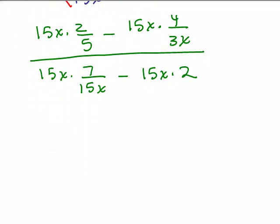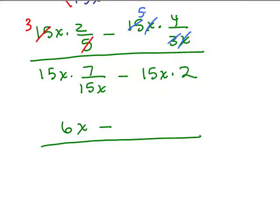Now we get to do the fun canceling. Let's see, 5 goes into 15 three times. So what I really have is 3 times x times 2, which is 6x. And I have minus, let's see what happens here. The x's both cancel, and the 3 goes into the 15 five times, so I really have 5 times 4, which is 20. Going down to the denominator, the 15x cancels with 15x, so I just have 7. And then I've got 15x times 2, which is 30x.